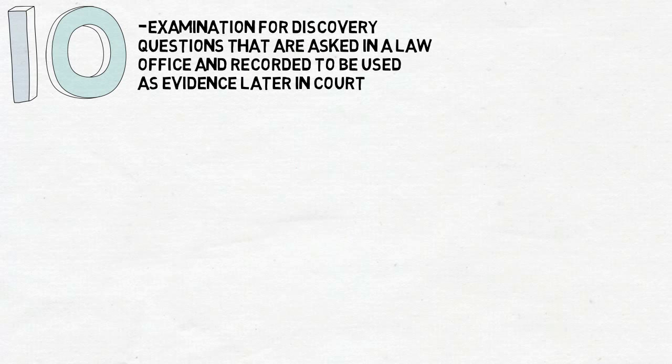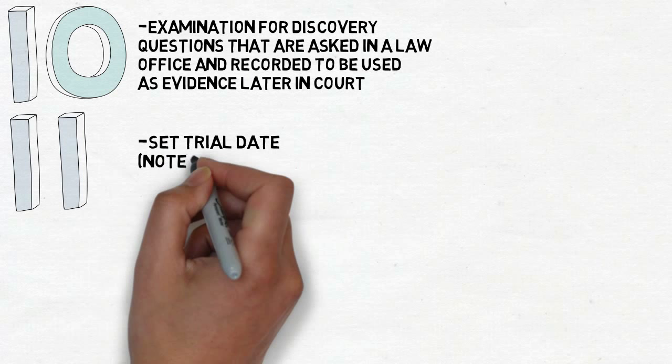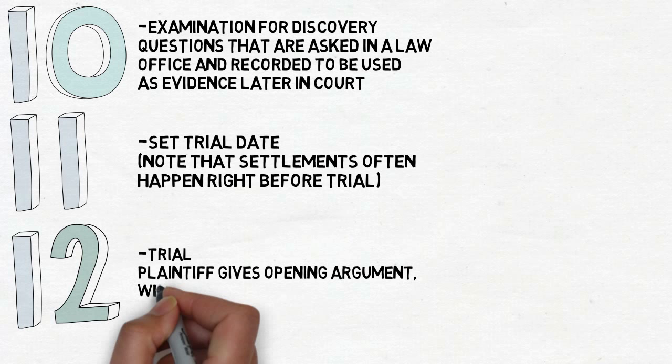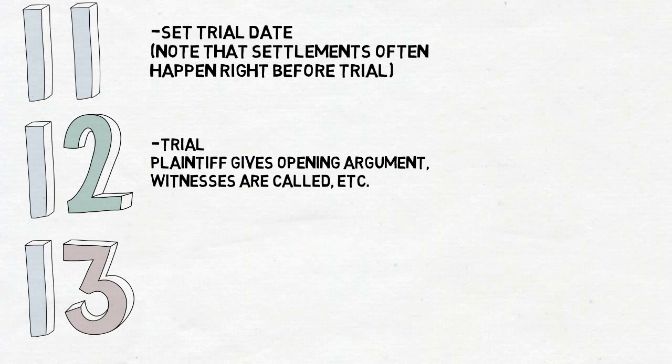Number eleven, Set Trial Date. Note that settlements often happen right before trial. Number twelve is the trial itself, when all the factors and events that normally occur during a trial take place. Following that, number thirteen is the Appeal Process.